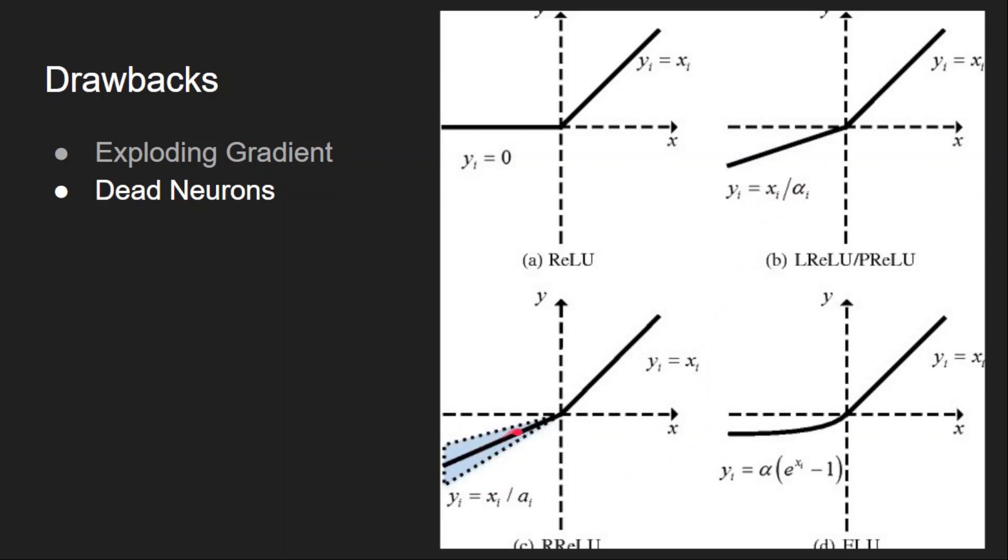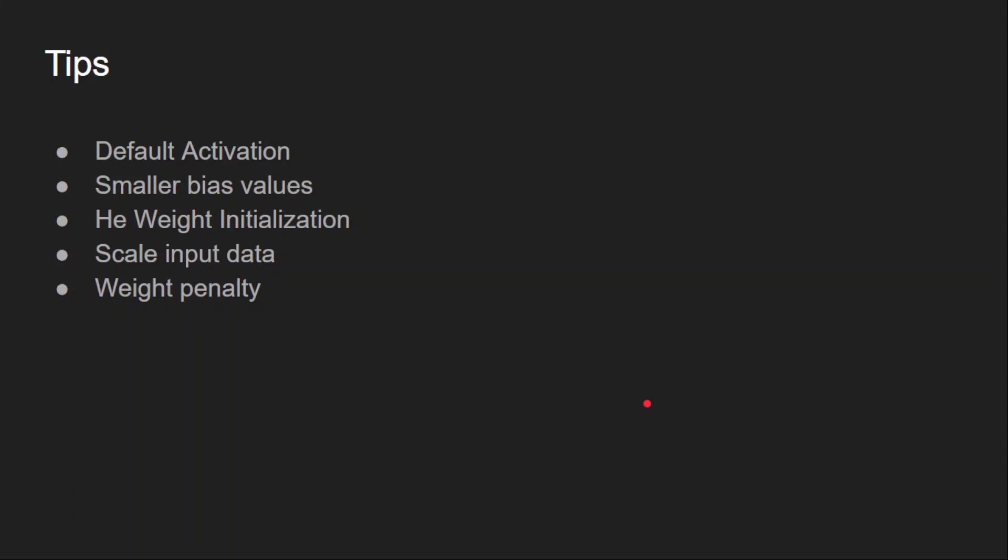Now here are the tips if you want to use ReLU as the activation function. Use ReLU as the default activation function for the hidden layers, not for the output layers. For output layers, we use softmax. This is by far the most used activation function for the hidden layers. So if you don't know which activation function to use, use ReLU. Use smaller bias values.